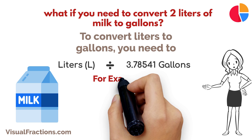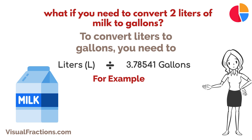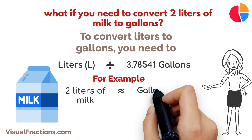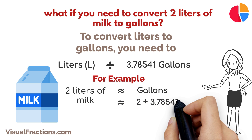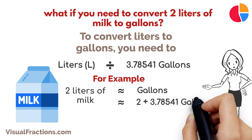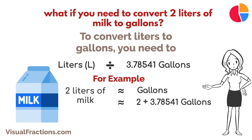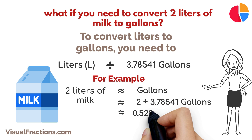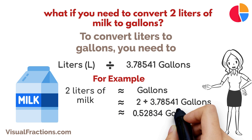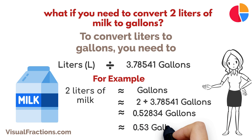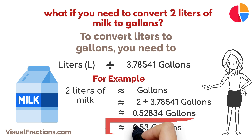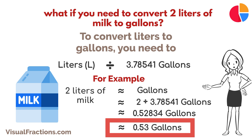Let's walk through an example of how to convert 2 liters of milk to gallons. We start by dividing 2 by 3.78541. This gives us approximately 0.52834 gallons. We should round this number to the nearest hundredth, so our final answer is approximately 0.53 gallons.